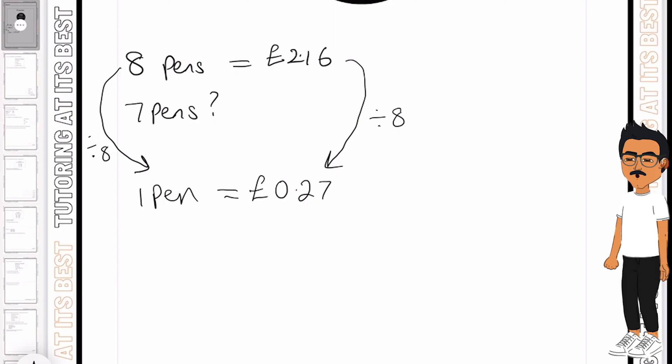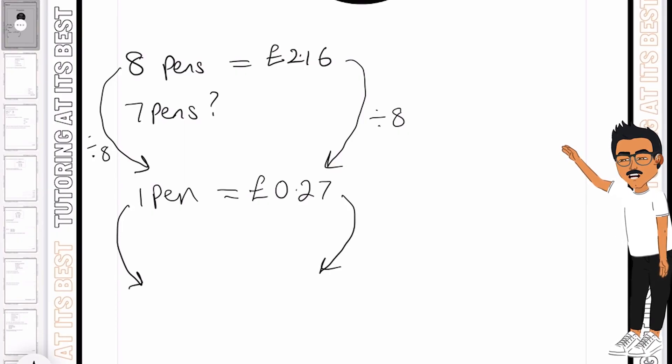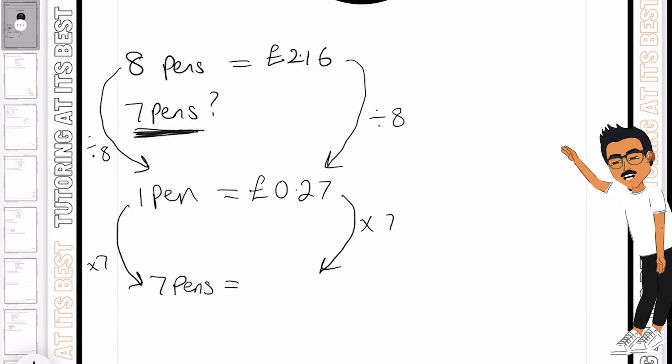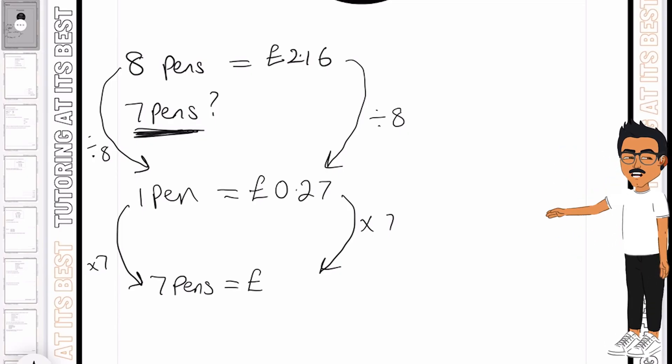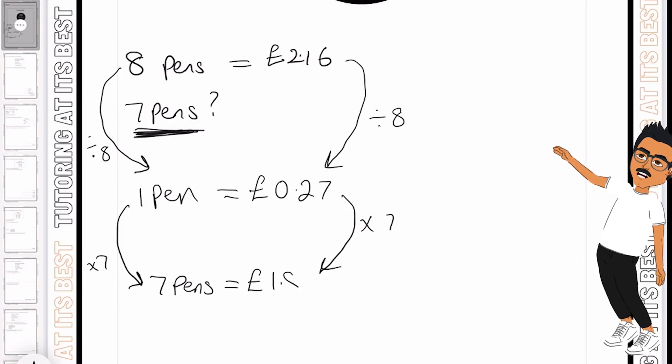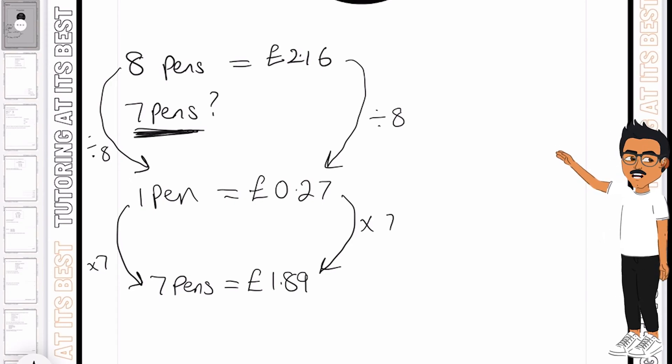So now I have the value of one pen, I can then multiply this out by 7 because I want to work out 7 pens. So 1 times 7 is 7 pens, and 27 pence times by 7 is £1.89. So 7 pens cost £1.89.